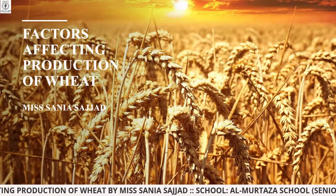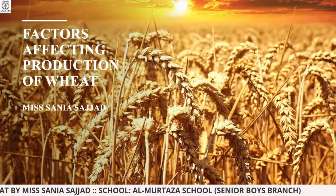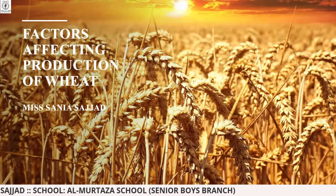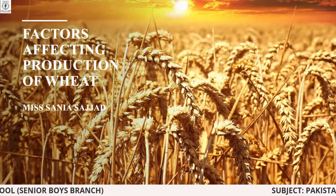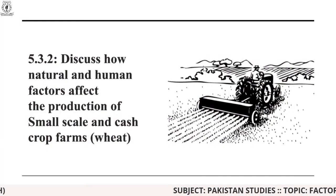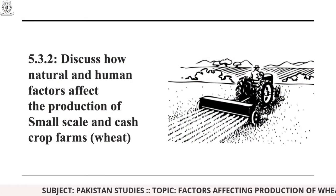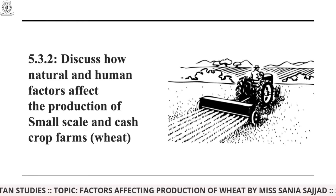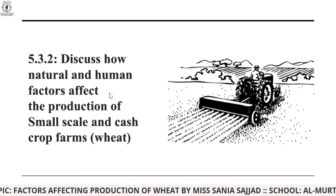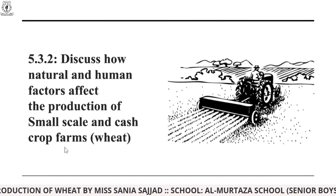But before moving forward, hurry up, grab your notebook along with pencil and pen, and start noting the important pointers because there were multiple MCQs along with questions which were included in the past papers. So let's get started. According to SLO number 5.3.2, it says: discuss how natural and human factors affect the production of small scale and cash crop farms.